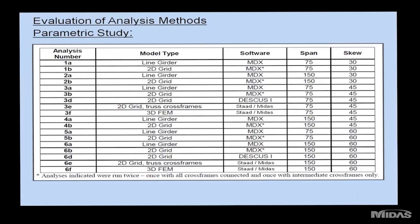Different levels of analysis were compared: line girder only; 2D grid using beam elements as in MDX and DESCUS, the common pre-packaged grid analysis software used by most Ohio consultants; an advanced 2D grid modeling individual cross-frame truss elements; and a full 3D finite element model with plate elements. Models were initially done in STAAD and later upgraded to MIDAS, which provides more powerful tools for staging and processing results.